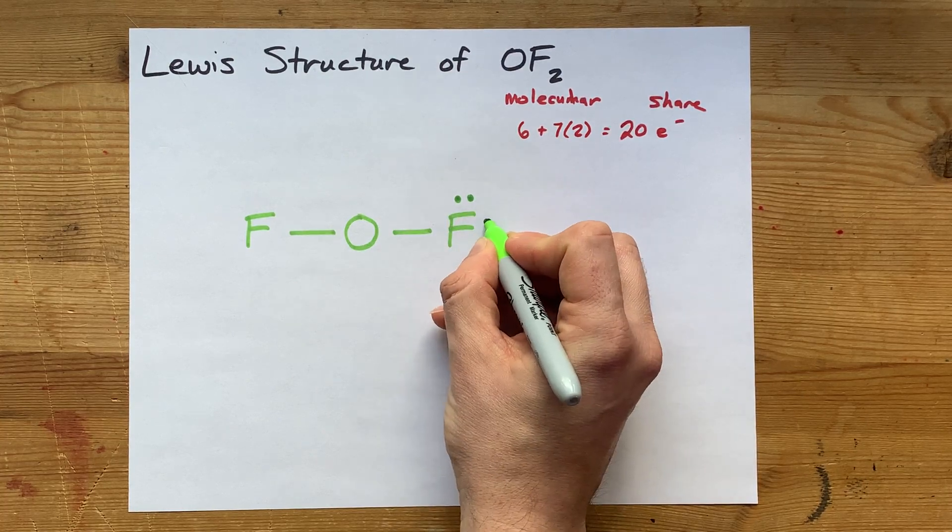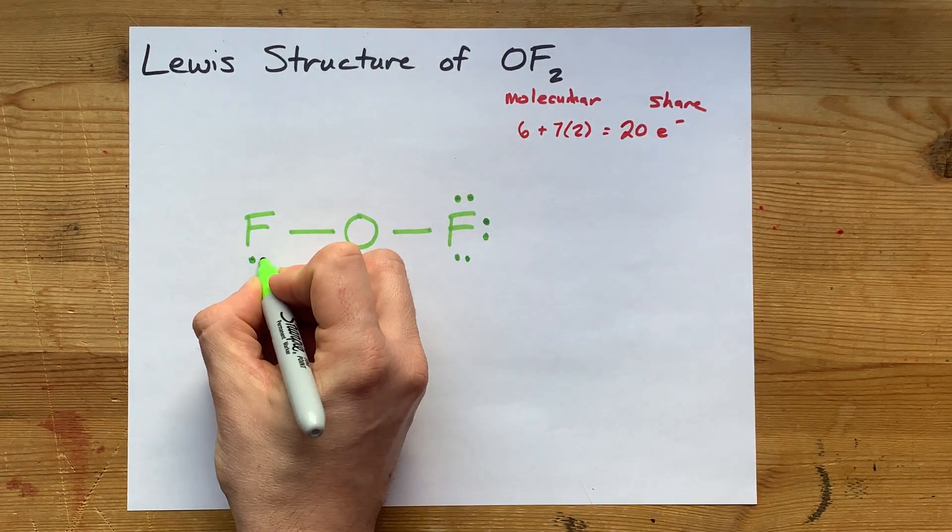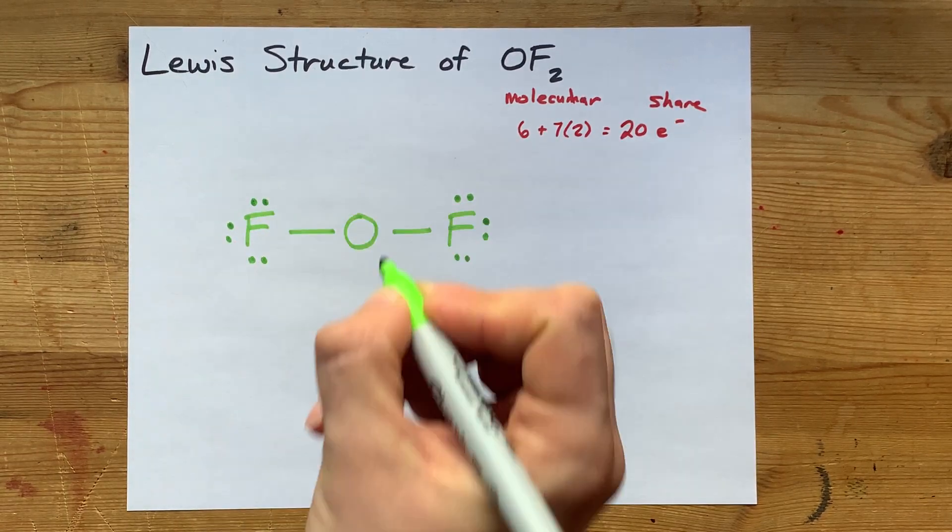So let's complete the octets on the outer atoms here. That's 5, 6, 7, 8, 9, 10, 11, 12, 13, 14, 15, 16.